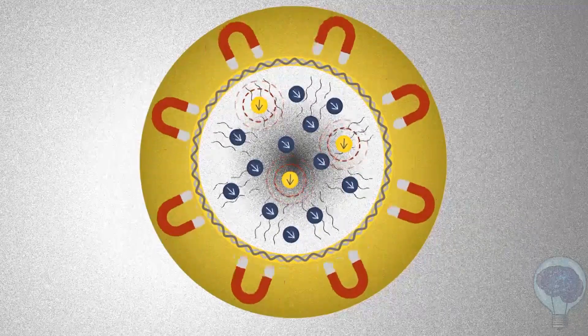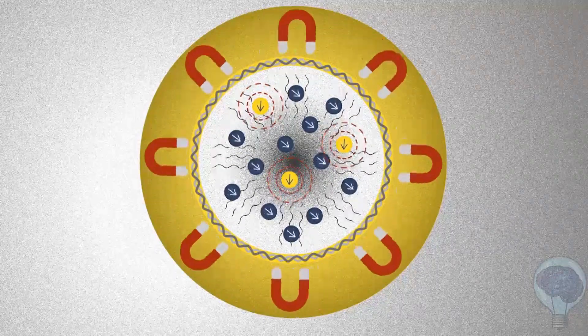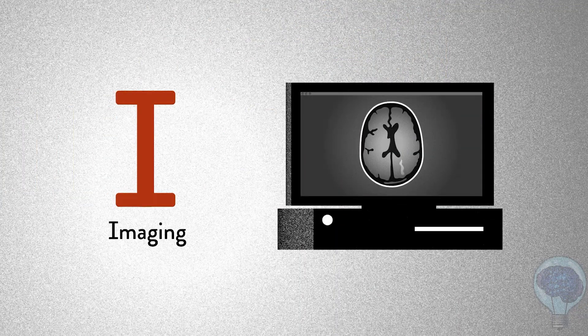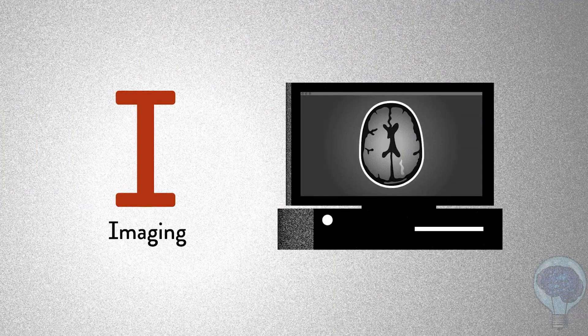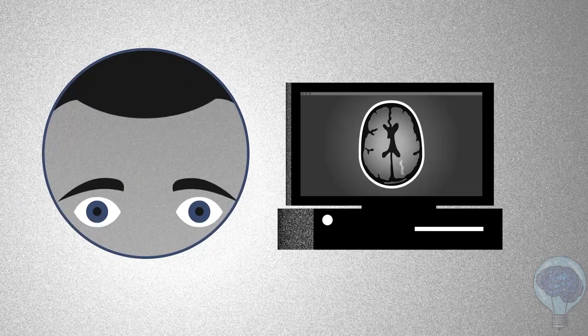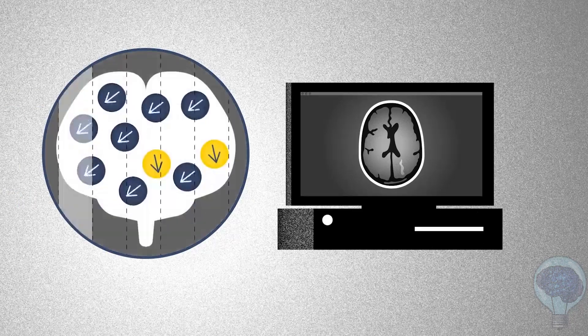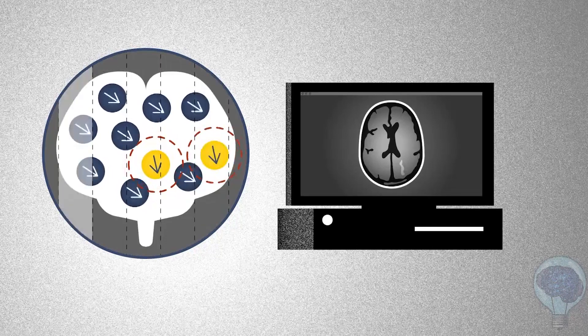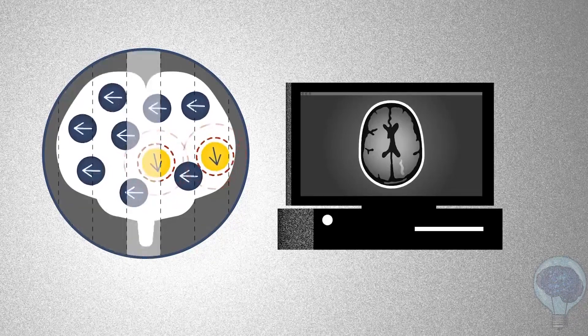This movement is detected by the MRI machine, and the signal is sent to a powerful computer, which uses imaging software to translate the information into an image of the body. By taking images of the body in each section of the magnetic field, the machine produces a final three-dimensional image of the organ, which doctors can analyze to make a diagnosis.